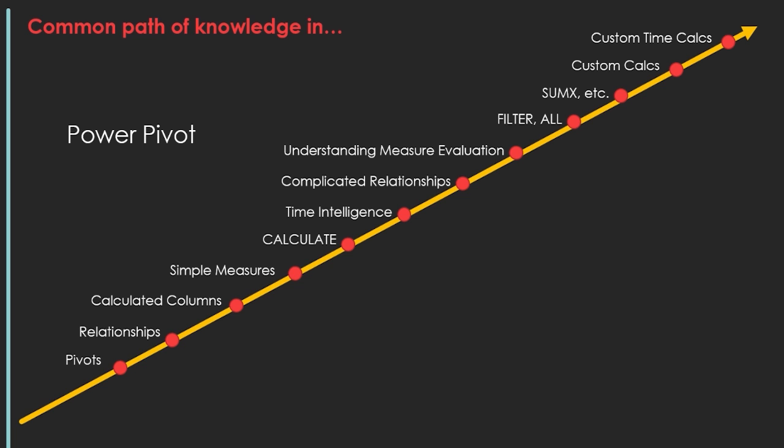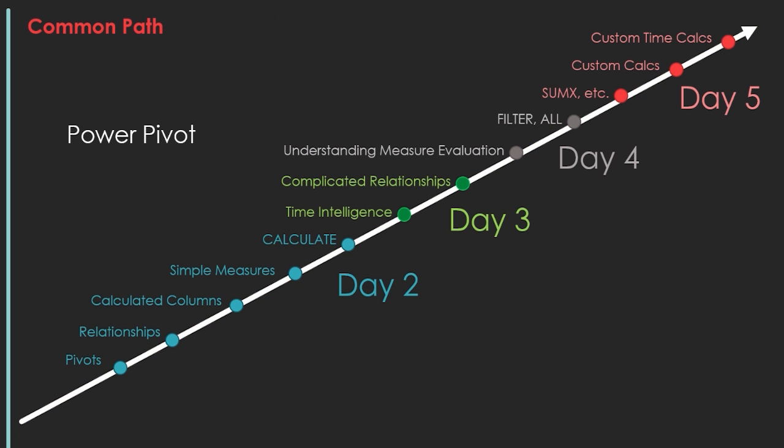We'll then want to do some much more interesting analysis, including creating complicated relationships, understanding measure evaluation, and being able to manipulate that knowingly using FILTER and ALL to do those manipulations, and using X functions to basically auto-insert row context where there isn't already row context. You'll get a lot more familiar with these terms as we go throughout the course. What we're covering today is everything in blue: looking at pivots, talking about relationships, creating calculated columns, creating simple measures, and getting a nice introduction to the CALCULATE function — probably the most important DAX function you'll ever learn.